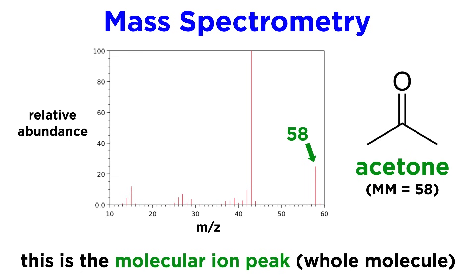First, we should note that some of the sample makes it through without being broken apart, so when we look at the rightmost data, we can presume that this includes the molecular ion peak. So this is acetone, which is ionized but intact. That's why it shows up at 58, because that's the molecular mass of acetone.